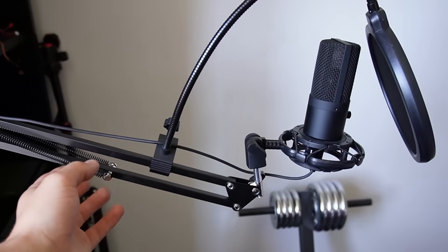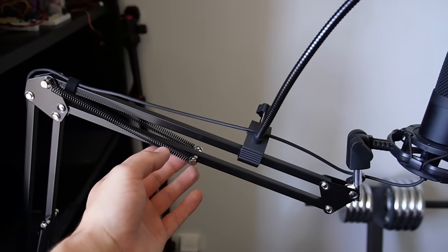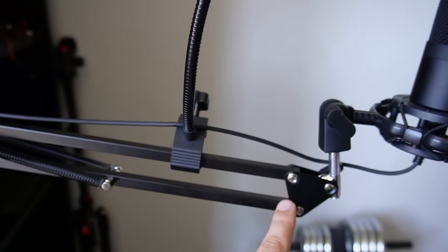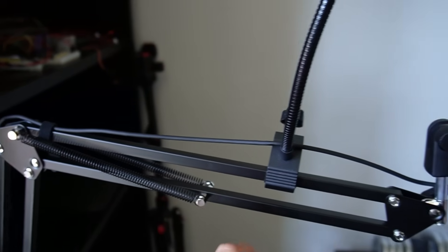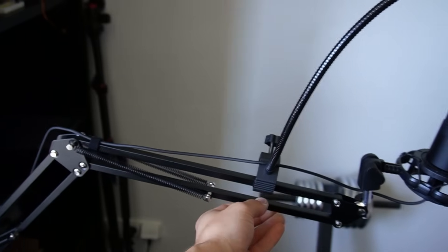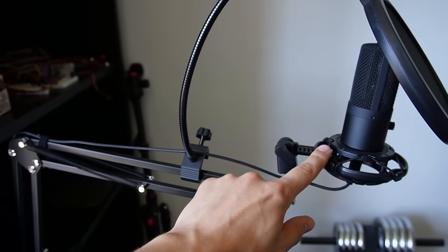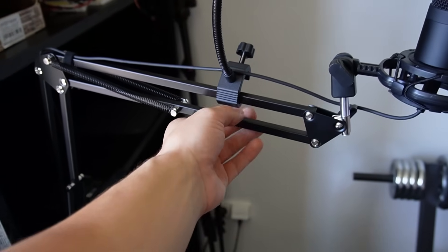I recently got this boom arm for my microphone and it's basically the same mechanism. So you can see this is the four-bar linkage and this spring keeps the mechanism stable. You can move this around and the weight of the microphone doesn't make the mechanism just collapse to the ground.